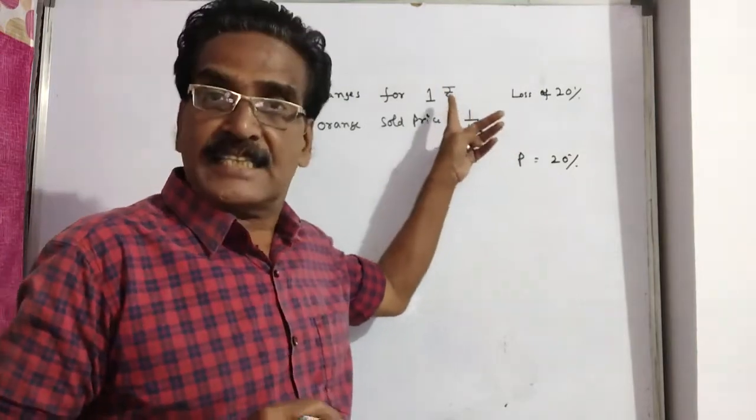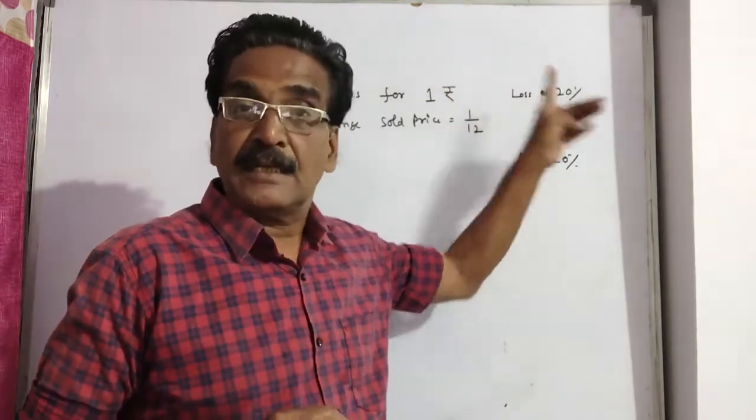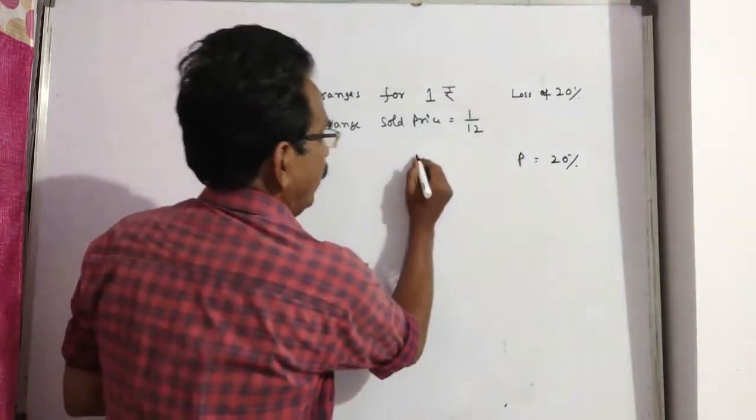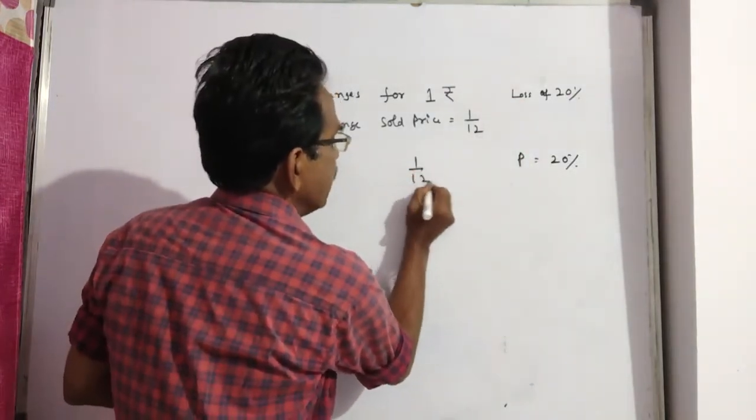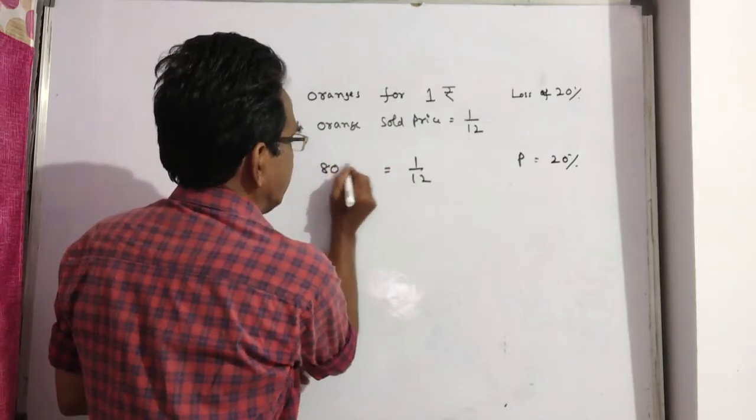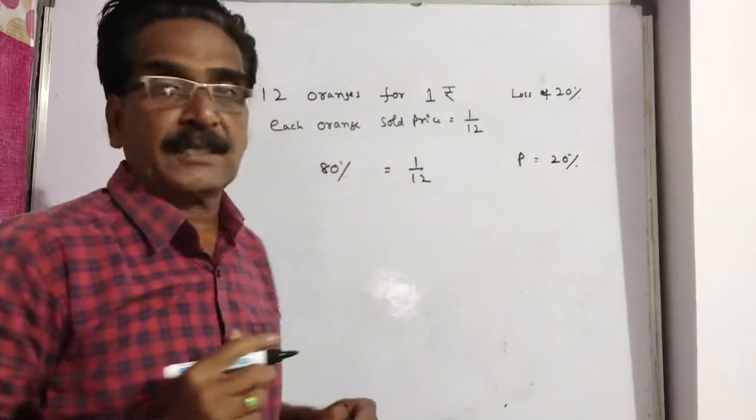If he sells at this price, he is getting a loss of 20%. That means this 1 by 12 is equal to 80% of the cost price, because he is getting 20% loss.